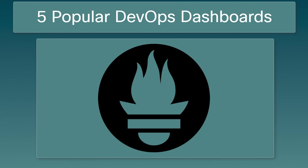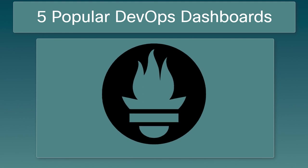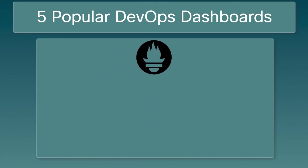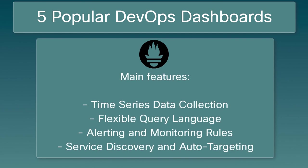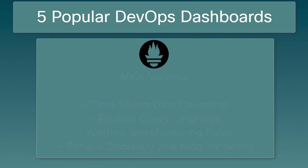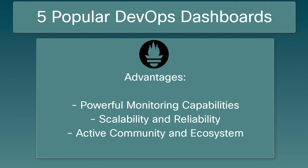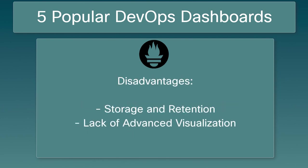Prometheus is an open-source monitoring and alerting tool that is often used in conjunction with Grafana to create comprehensive DevOps dashboards. Main features include time series data collection, a flexible query language, alerting and monitoring rules, and service discovery and auto-targeting. Advantages include powerful monitoring capabilities, scalability and reliability, and an active community and ecosystem. Disadvantages include storage and retention limitations and lack of advanced visualization.